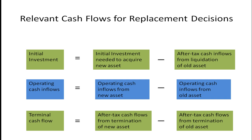Let's look at an example: what are the relevant cash flows for a replacement decision — should a company replace a truck, computer system, or air conditioning system? First, you look at the initial investment, which equals the cost to acquire the new asset minus the after-tax inflows from liquidation of the old asset. You may be able to sell the old truck. Like trading in a car — you might buy a new car for $20,000, but your old car gets you $5,000 or $6,000 on trade-in, reducing the initial investment.